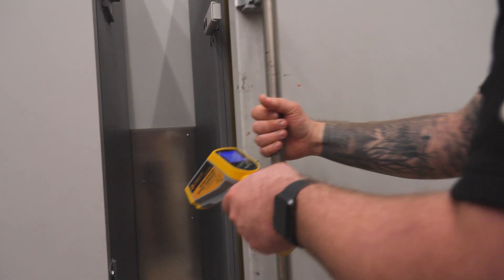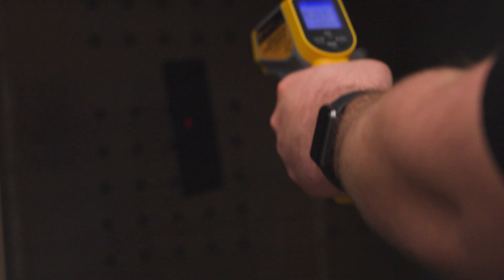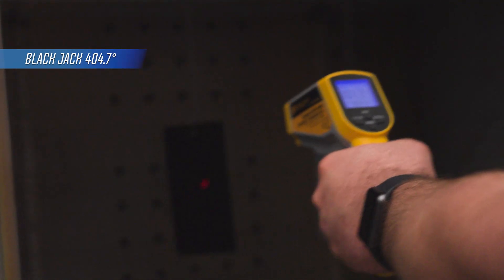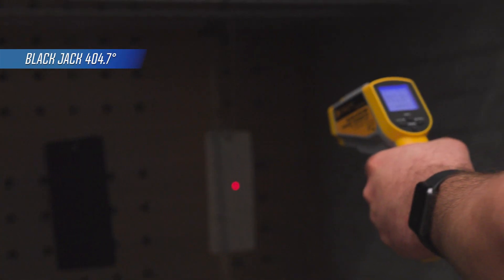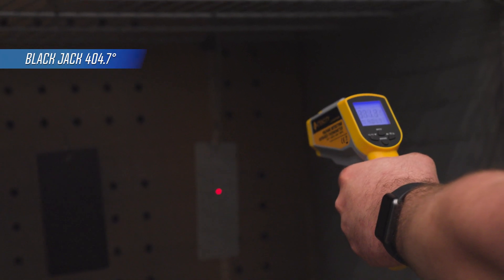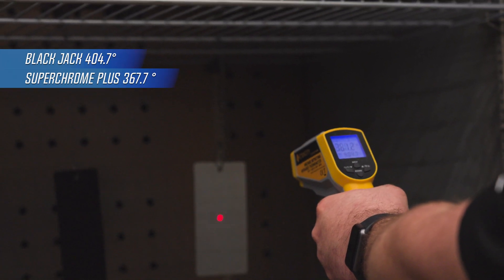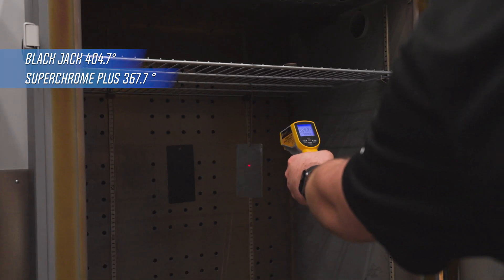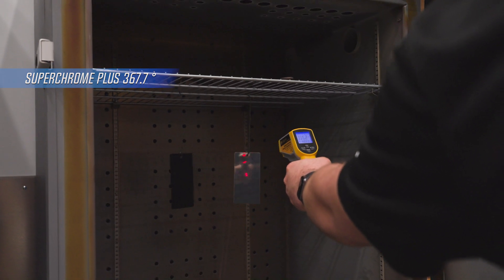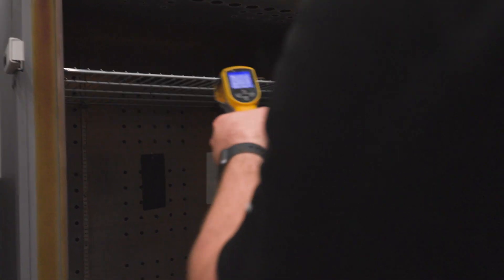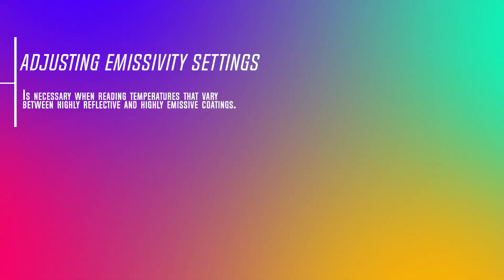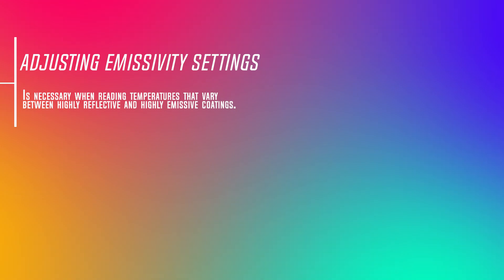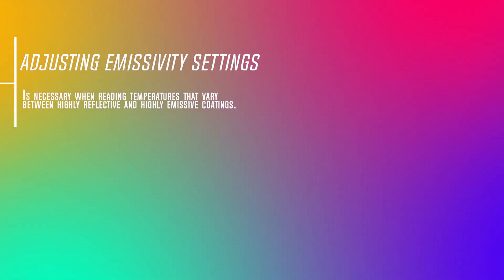We got readings on our IR thermometer of 404.7 degrees Fahrenheit on the panel with blackjack and 367.7 degrees Fahrenheit for the panel with super chrome plus. This does demonstrate how the infrared signature coming from a highly reflective surface can indeed give a faulty reading on an IR thermometer.